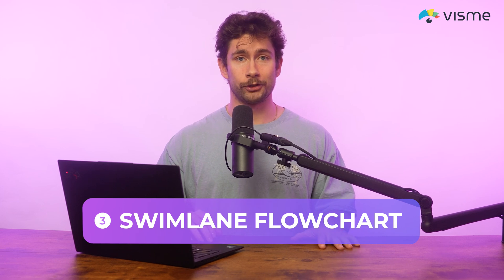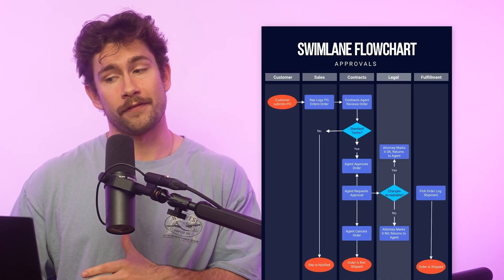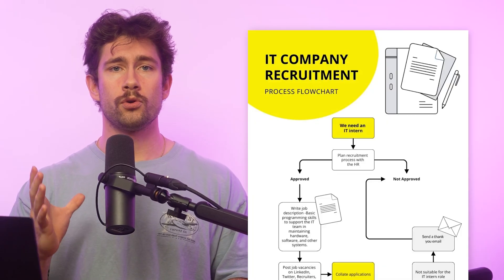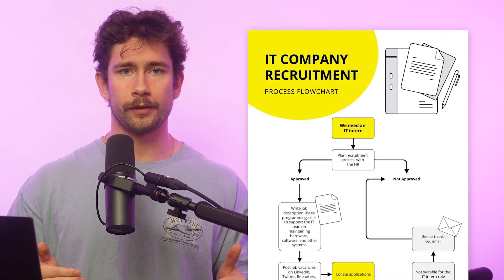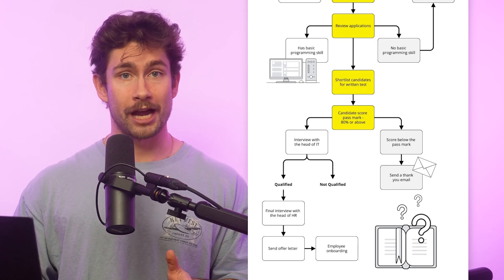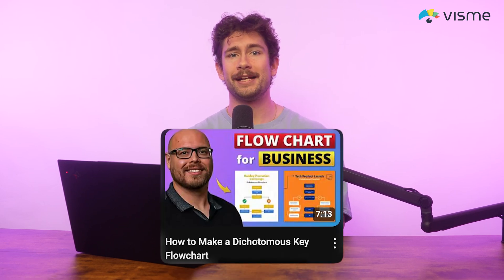My third recommendation is the swim lane flowchart. Your clients and employees will really appreciate the visual explanation of your processes using this template — it makes showing different department roles easier to understand in a specific process. My fourth recommendation is the recruitment flowchart, which breaks down your company's recruitment process. HR managers and officers can use this so onboarding is fully streamlined, and everything is fully editable so the template can be tweaked for any business industry or topic. My fifth recommendation is the supply chain flowchart — use it to ensure everyone on your team knows what to do when the supply chain is disrupted.